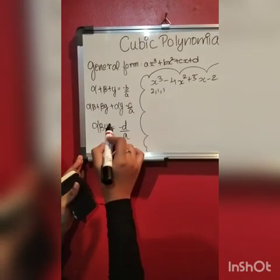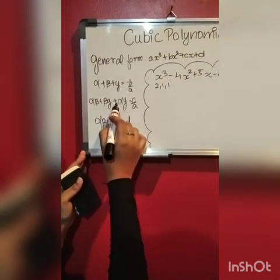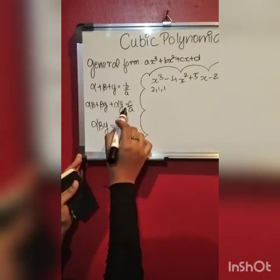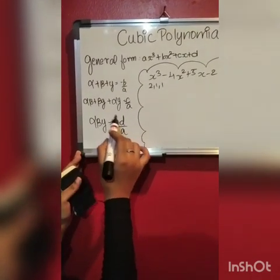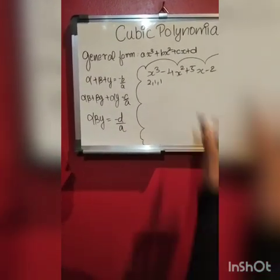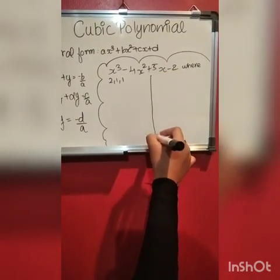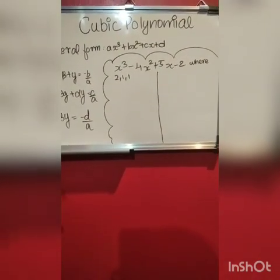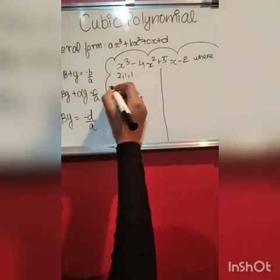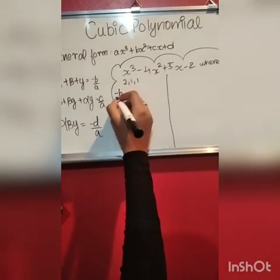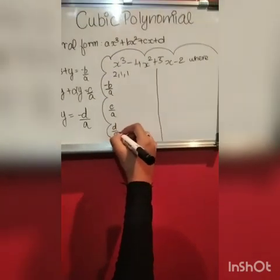For a cubic polynomial with zeros alpha, beta, and gamma: their sum is minus b by a. And alpha into beta plus beta into gamma plus alpha into gamma is c by a. And alpha into beta into gamma is d by a. We have to verify it between the coefficients and zeros: minus b by a, c by a, and d by a.